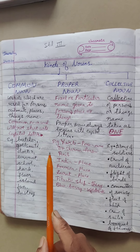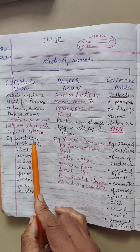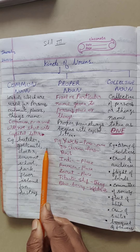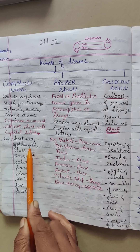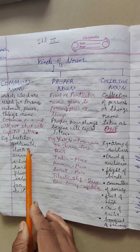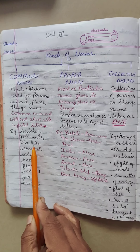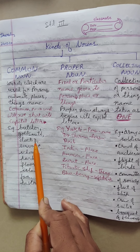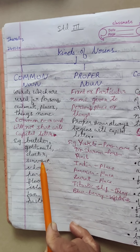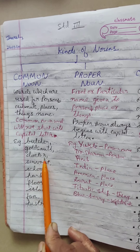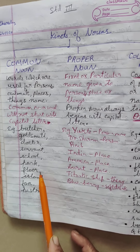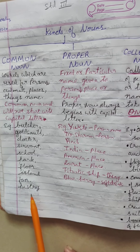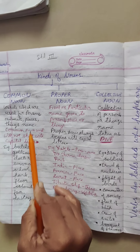Example: butcher - butcher means who cuts meat in small pieces. Goldsmith makes ornaments and works with gold metals. Blacksmith burns metals like iron. Common nouns include: doctor, servant, school, park, floor, island, fan, pastry. These are the common nouns.